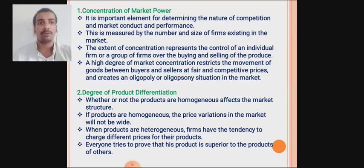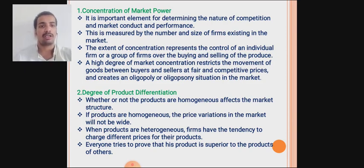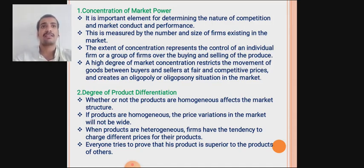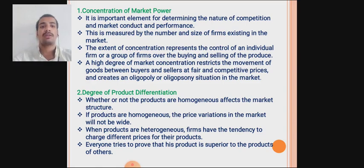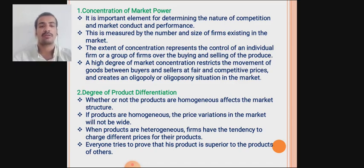The next component of market structure is degree of product differentiation. Products can be homogenous or heterogeneous. If products are homogenous, price variation will be very low. If products are homogenous, firms have a tendency to charge similar prices. However, if products are heterogeneous, the price range and price variation will be very high, as everyone tries to prove that their product is superior.